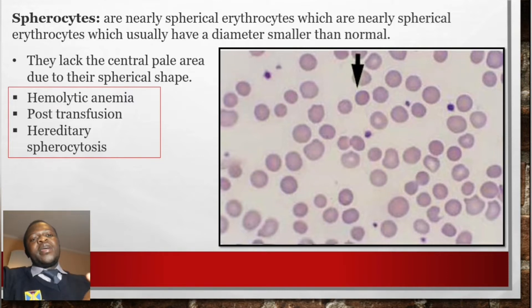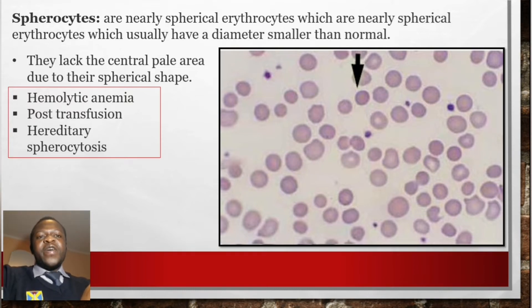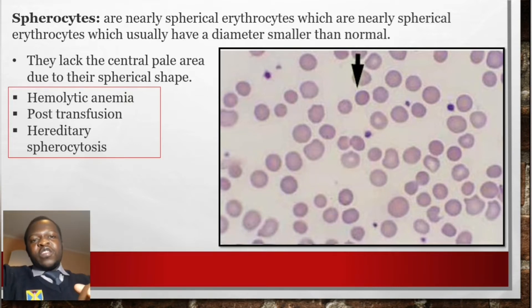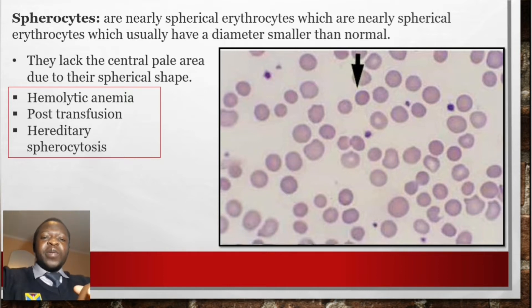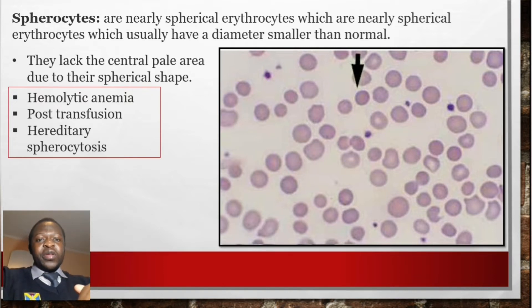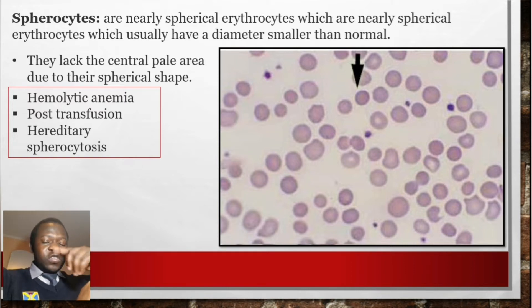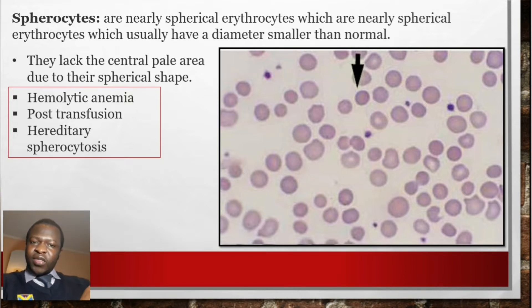Spherocytes are RBCs which are nearly spherical and usually have a diameter smaller than normal. These cells lack the central pale area due to their spherical shape. Spherocytosis is mostly found in hemolytic anemia, post-transfusion, and hereditary spherocytosis — in that condition the patient lacks the anchoring protein which attaches alpha and beta spectrin to other proteins in the cell membrane.